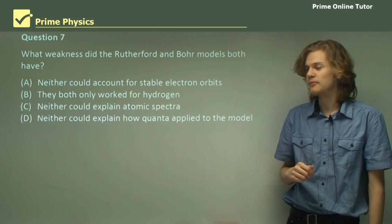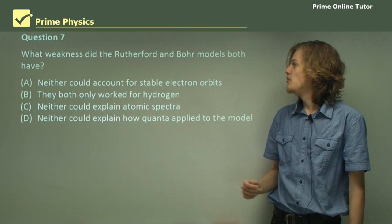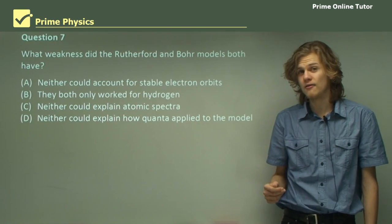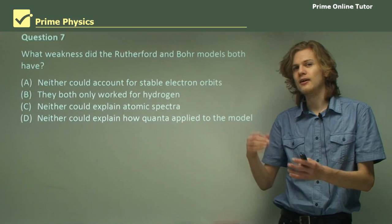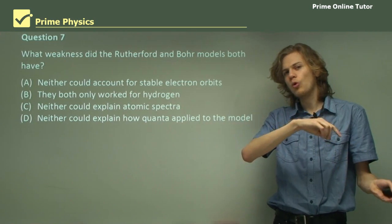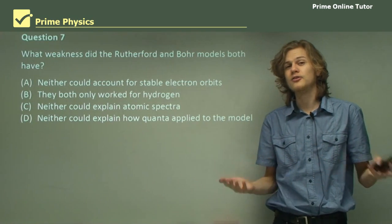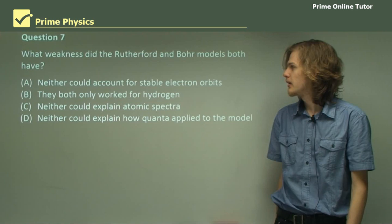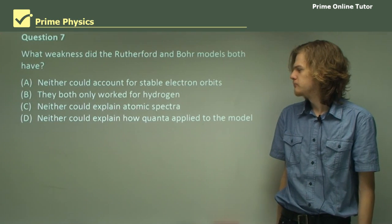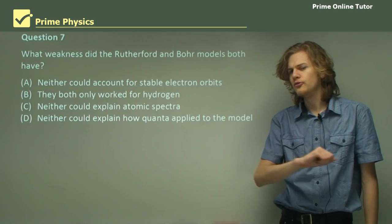Question 7. What weakness did the Rutherford and Bohr models both have? Remember that the Rutherford model has a number of electrons orbiting a nucleus. A little bit like a solar system. So we have a few options here. Let's start at the bottom and work our way to the top.